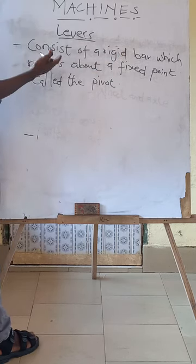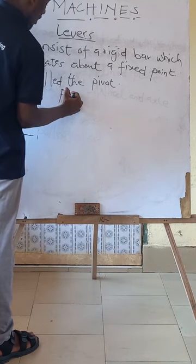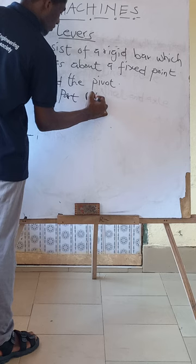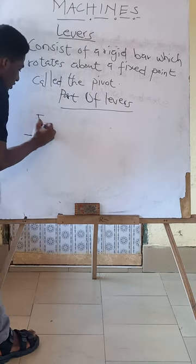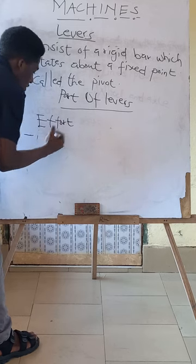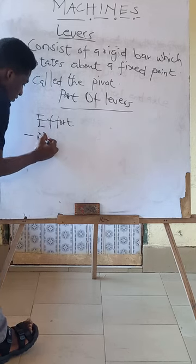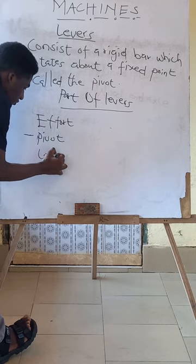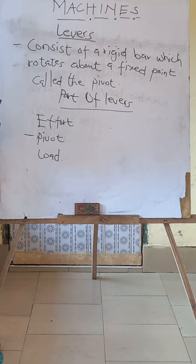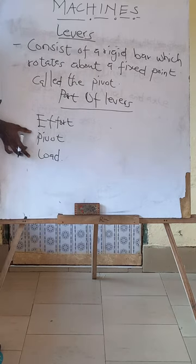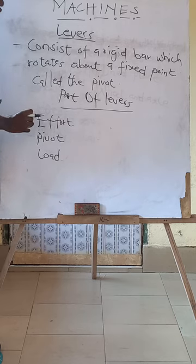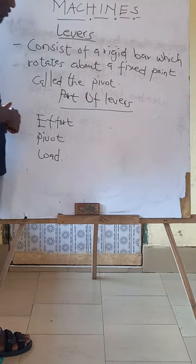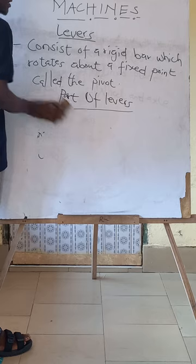So with this we have the parts of levers. We have the effort, we have the pivot, and we have the load. These three parts form what you call the lever. In every lever we have the effort, the pivot, and the load. Let's look at what each of them stands for.